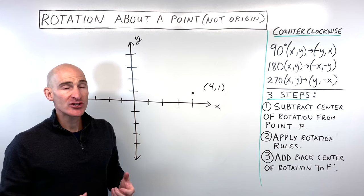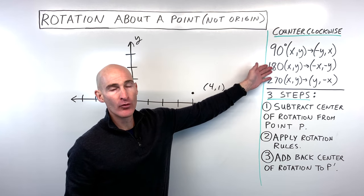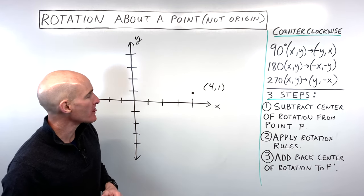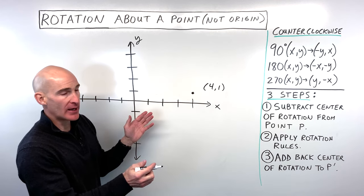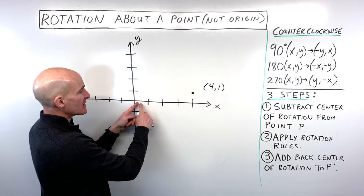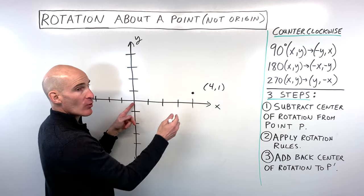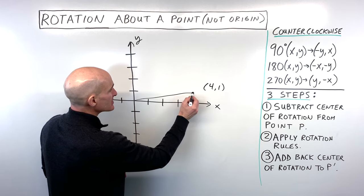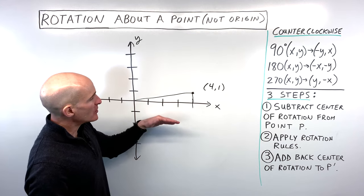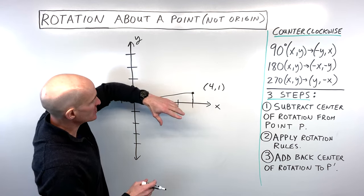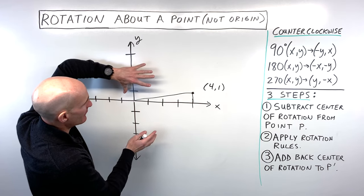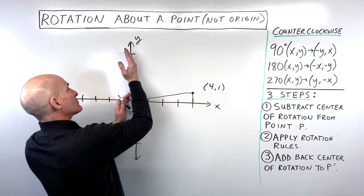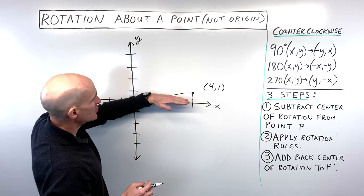Now let's understand where these rules come from — the 90, 180, and 270 degree counterclockwise rotation rules. I'll take the simple point (4, 1) and draw it as a triangle to visualize. Imagine holding your finger at the origin and turning the paper 90 degrees — a quarter turn. The x-axis would turn and match up with the y-axis.